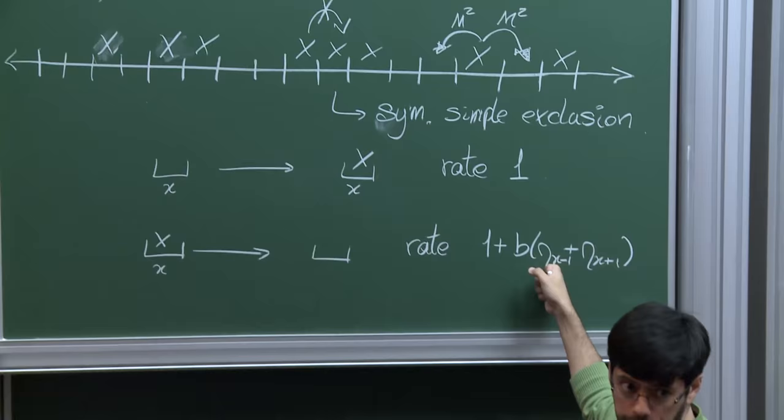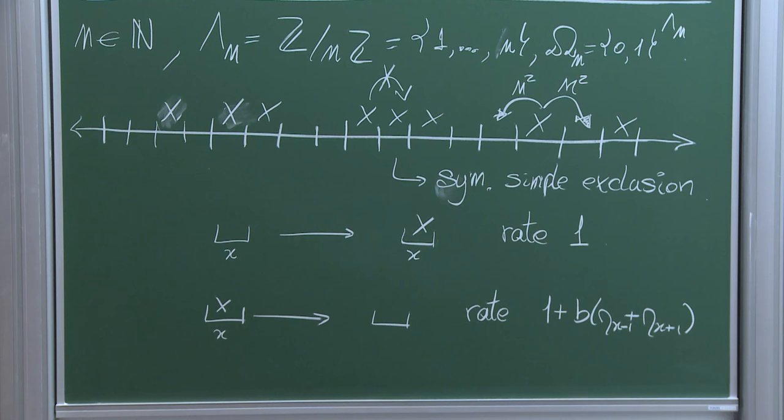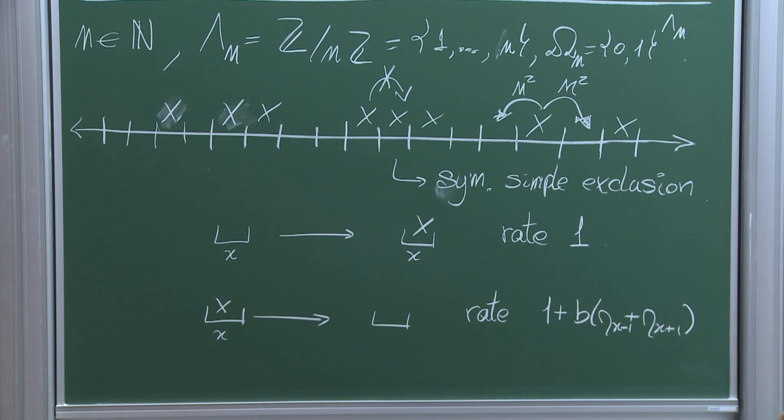As an easter egg: you can check that these rates actually leave invariant the Gibbs measure of the Ising model that Thierry defined this morning. What is important is that the product measure, which was the invariant measure for the exclusion process, is no longer invariant because of this extra factor. This is my sequence of Markov chains parametrized by the scaling parameter n.